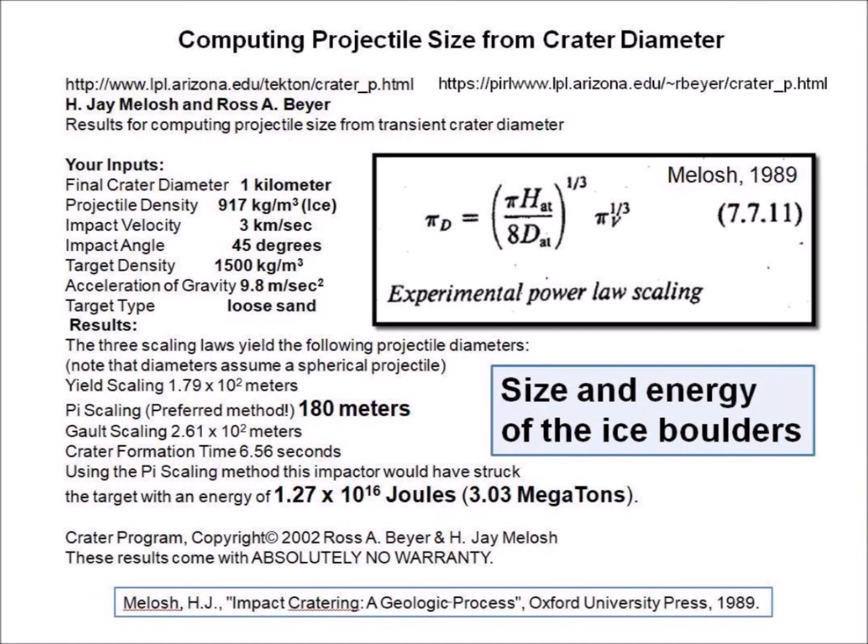Power loss scaling equations implemented by Professor Jay Melosh and Ross Bayer, relating projectile size to crater diameter, can be used to estimate the size and energy of the ice boulders that made the Carolina Bays. A Carolina Bay with a diameter of 1 km requires an ice projectile with a diameter of 180 meters and energy of 3 megatons of TNT. Using the law of conservation of energy, it is possible to calculate the energy of the extraterrestrial impact from the energy required to form all the bays.